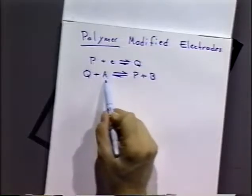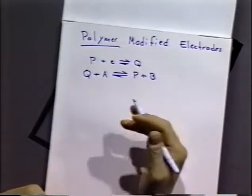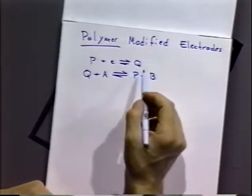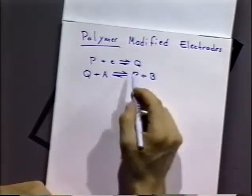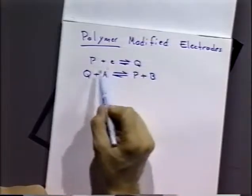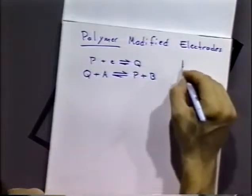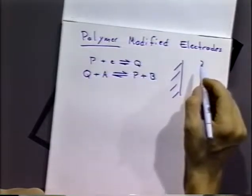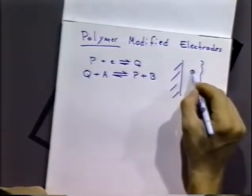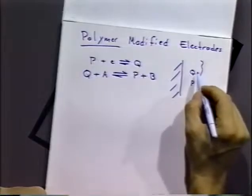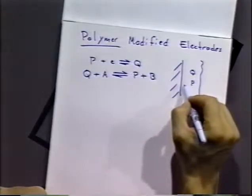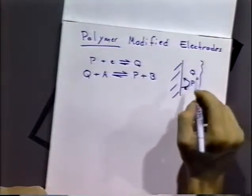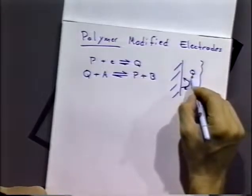The desired reaction is A to B, which may or may not be available at the electrode surface — it may have a high overpotential. But we can generate in situ the reductant Q. If it's in the polymer, bound to the polymer, then we have it stabilized, and then it can react with A to do the job. You'd have an electrode with a polymer modified surface, inside which molecule P undergoes electron transfer at the electrode, which leads to Q.